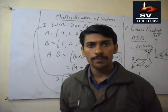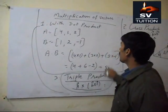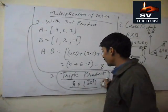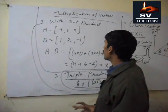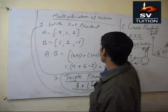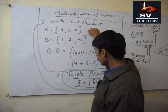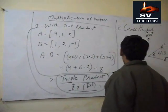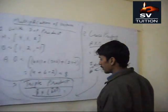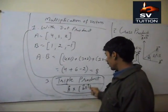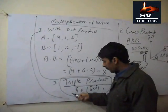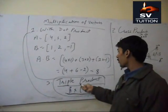Now we will explain the third method of multiplication of vectors: triple product. As per triple product, first of all we calculate the multiplication of vectors through dot product. Suppose it is A vector, and then we multiply the vectors through cross product. And its value is B vector into C vector. When we multiply both, this will be triple product.